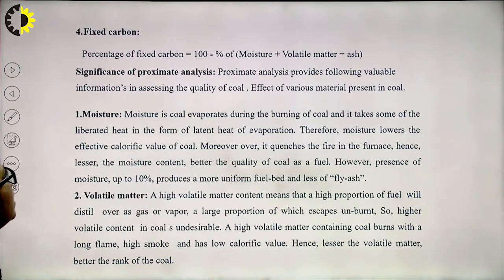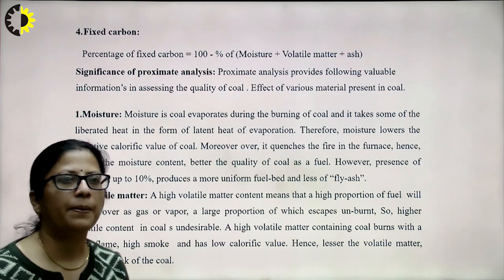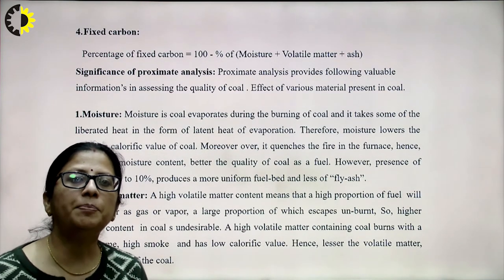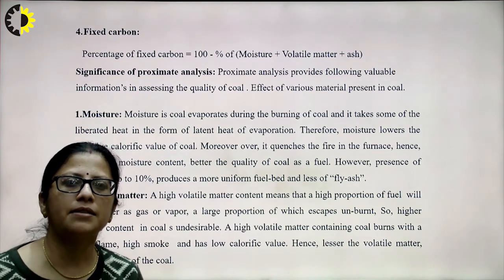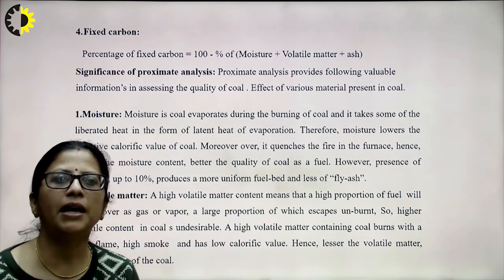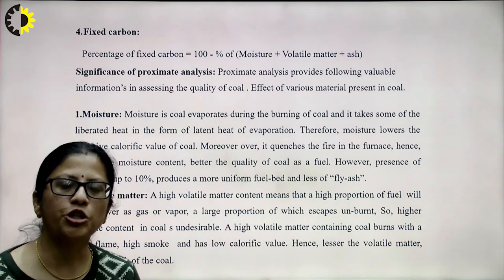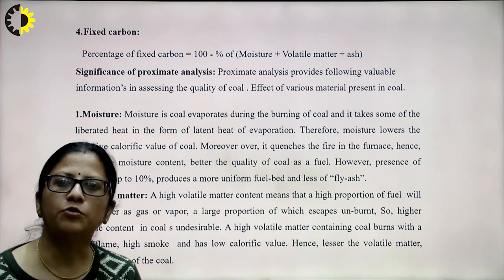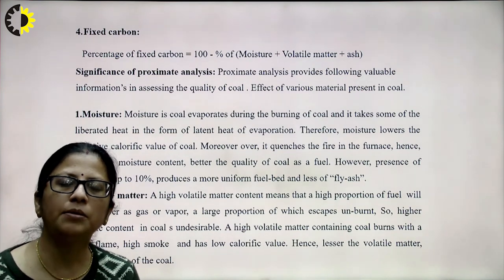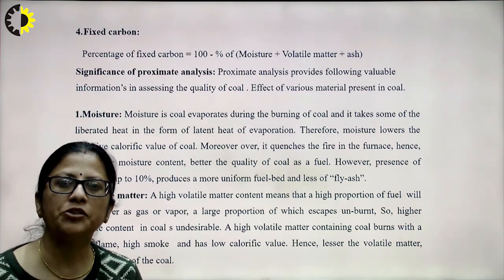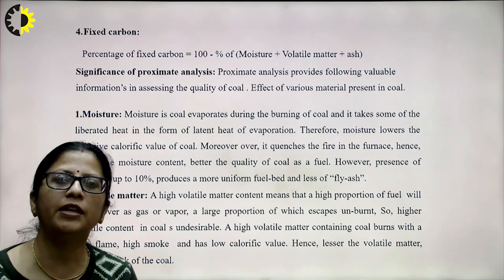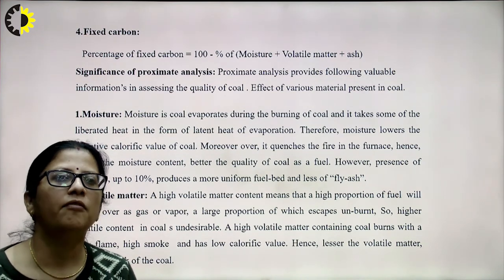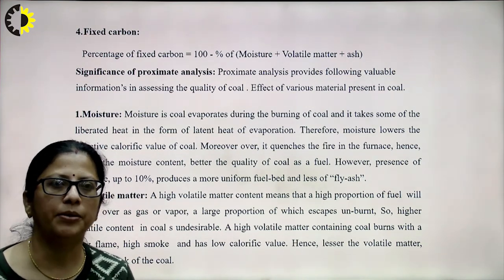The percentage of fixed carbon is calculated as: 100 − (percentage of moisture + volatile matter + ash). Adding these three values and subtracting from 100 gives the value of fixed carbon.